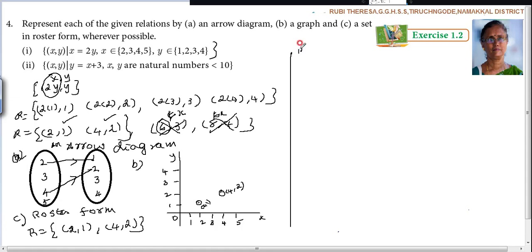Second problem: X, Y such that Y equals X plus 3. X, Y belongs to... You have to find out the elements. They are given in set builder form. Here you have to write it in roster form. Less than 10. Natural numbers. That means starting with 1: 1, 2, 3, 4, 5, 6, 7, 8, 9. Then close bracket.